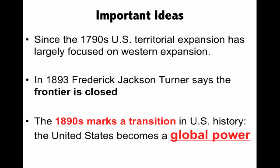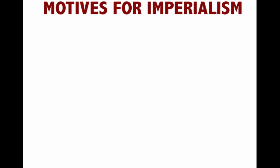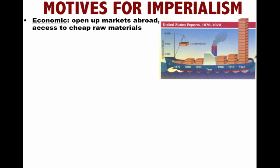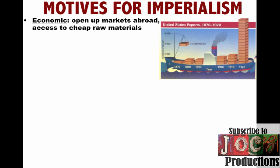There are a whole bunch of motives for imperialism. One is economic. The Industrial Revolution is in full swing. We want to open up markets abroad — new places to trade, not just industrial and manufactured goods, but also agricultural ones. U.S. companies want access to cheap raw materials, and you can see U.S. exports going up in each decade to follow.